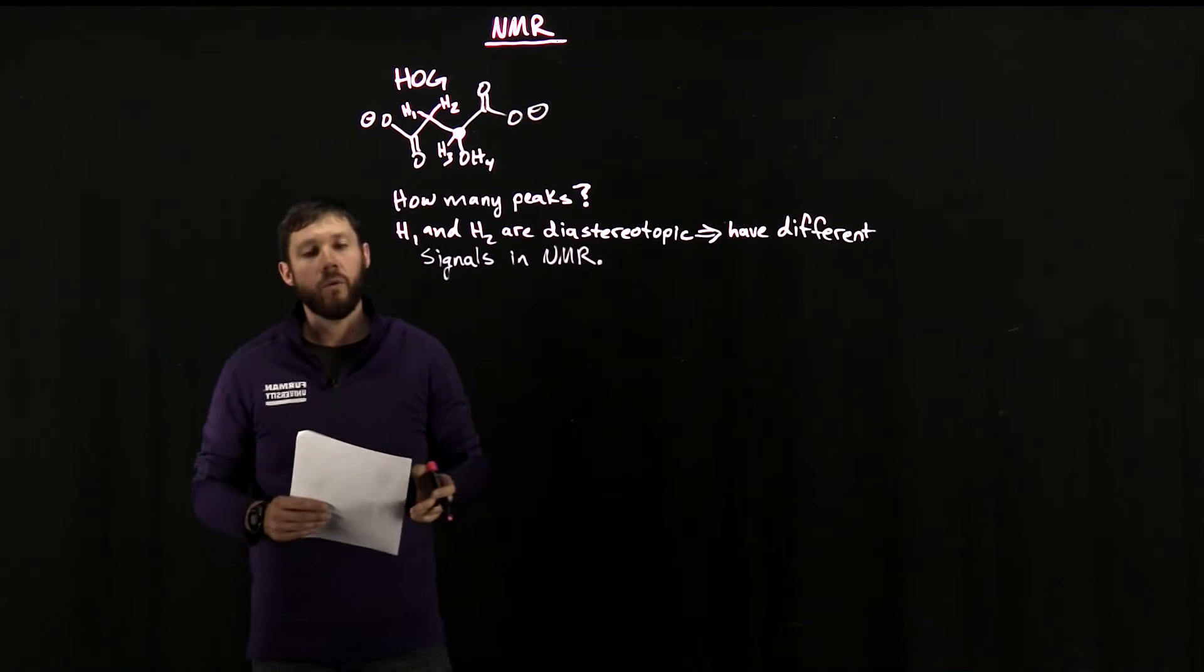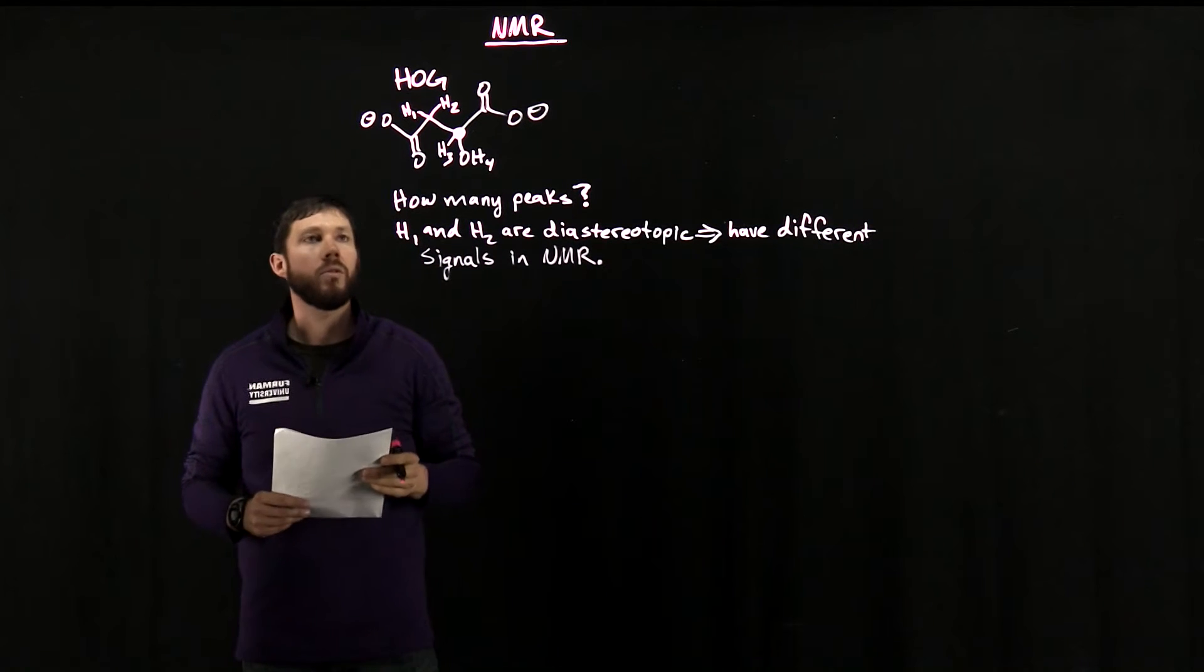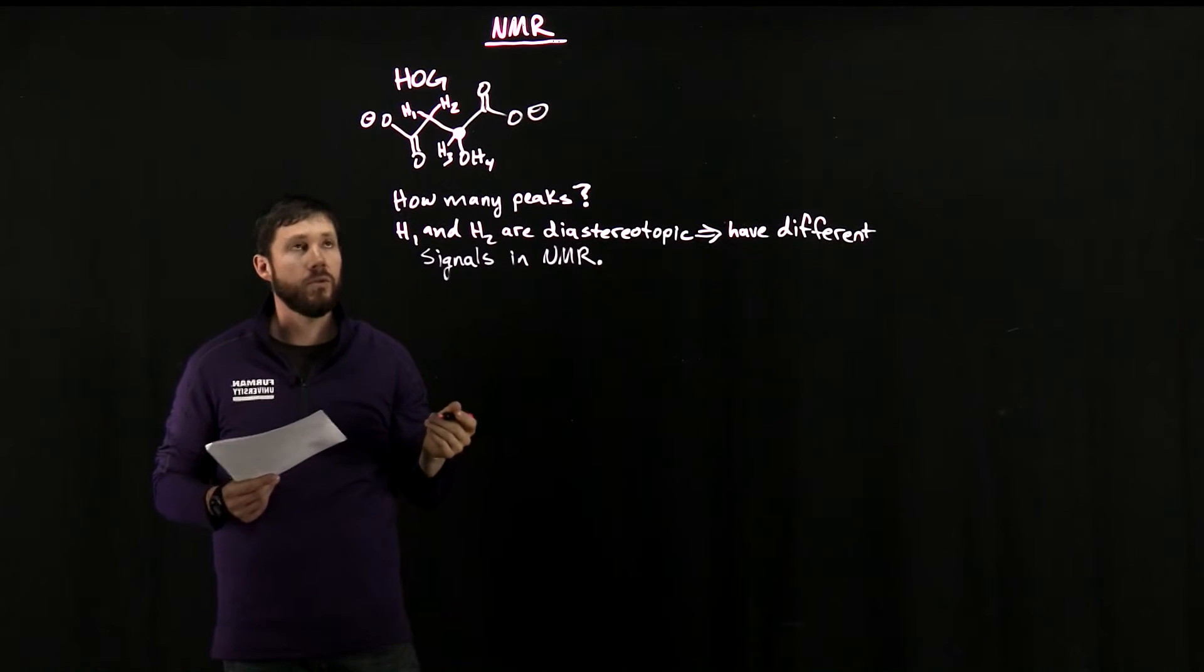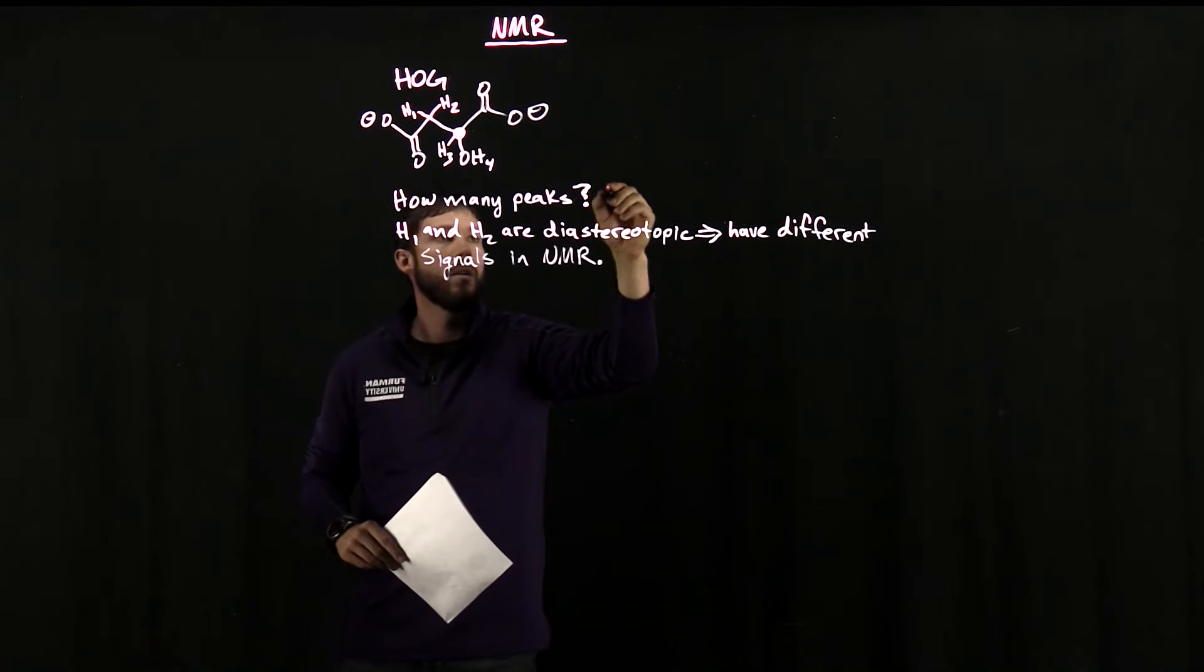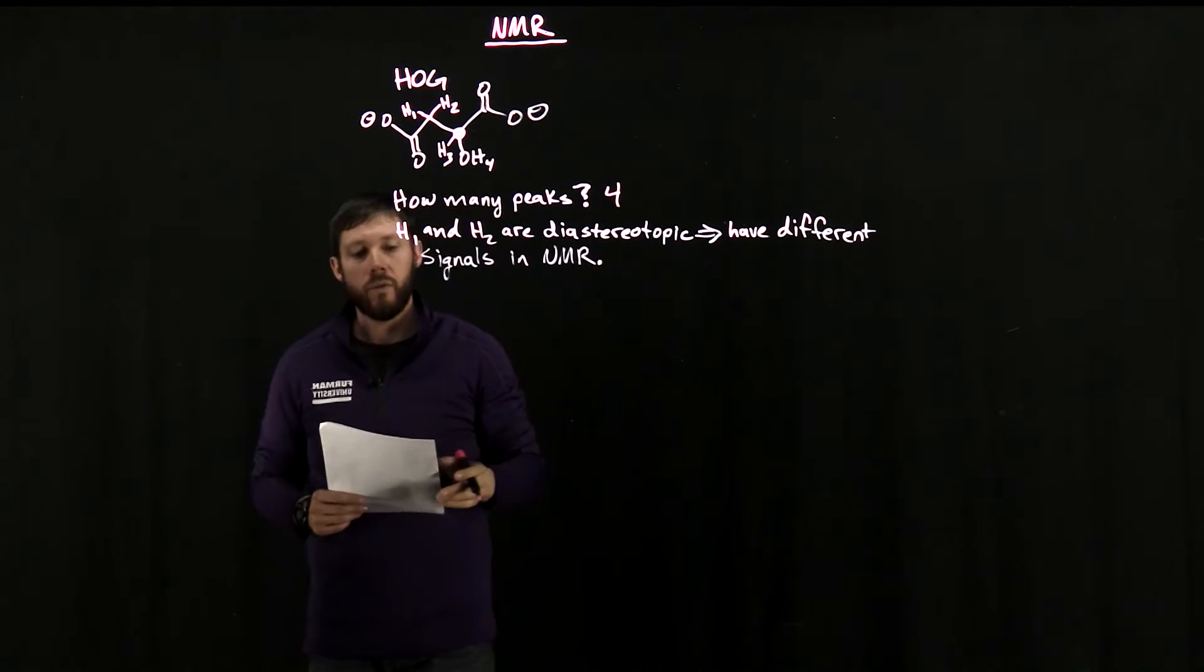So armed with this information, it seems like we could just go through and count all the hydrogens, and that'll tell us how many peaks we should expect in the NMR. So we've got one, two, three, four. So on the surface, it looks like we should have four signals.